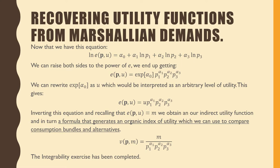So inverting this equation and recalling that our expenditure function is equivalent to our income, we obtain our indirect utility function, and in turn, the formula which generates an organic index of utility which we can use to compare consumption bundles and alternatives. What we end up getting is that our indirect utility function is equal to income m over p_1^(α_1) p_2^(α_2) p_3^(α_3). Thus, the integrability exercise has been completed.